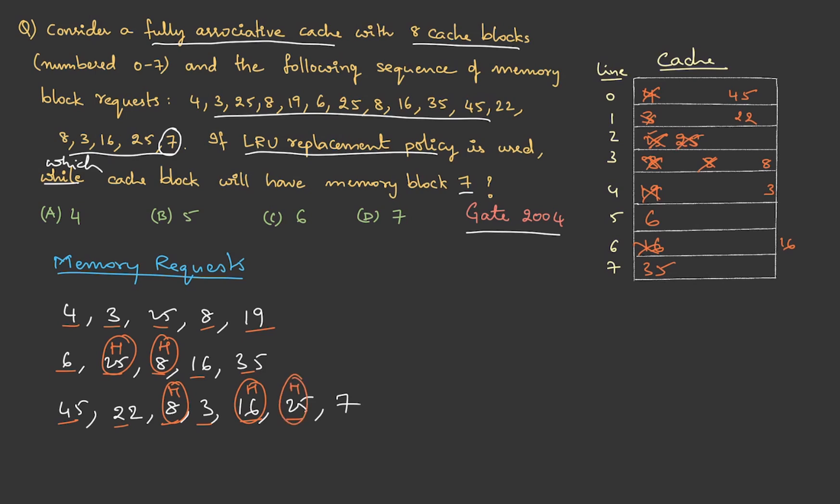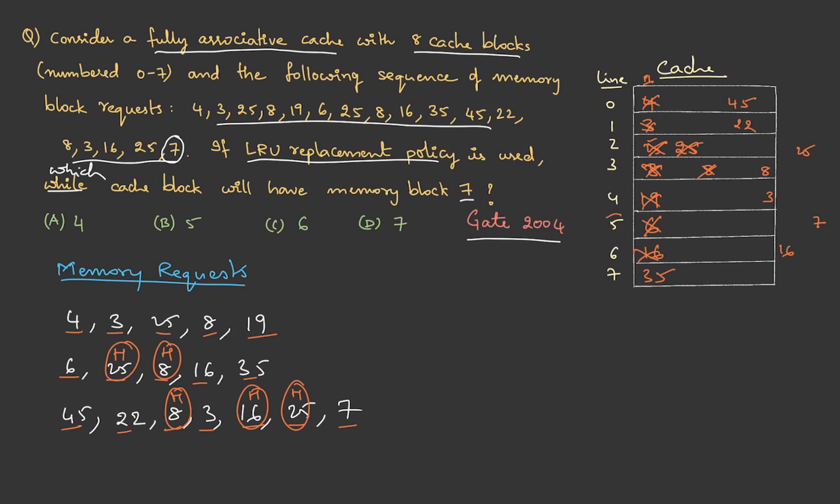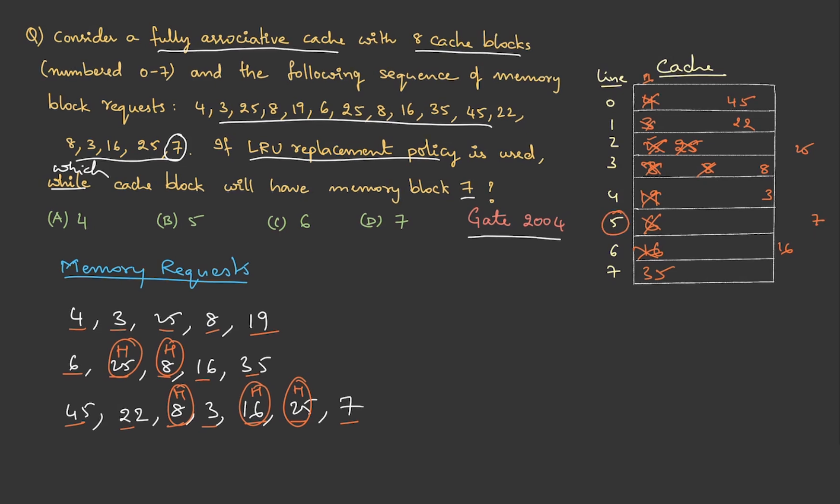Then we have 7. To place 7, look for the least recently used. Always go with the priority one list. In the priority one list, we see that this is not struck, so we can place it over here. Therefore, 7 belongs to line 5, and option D is the correct answer.